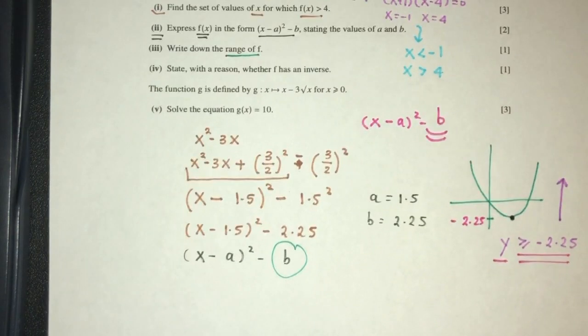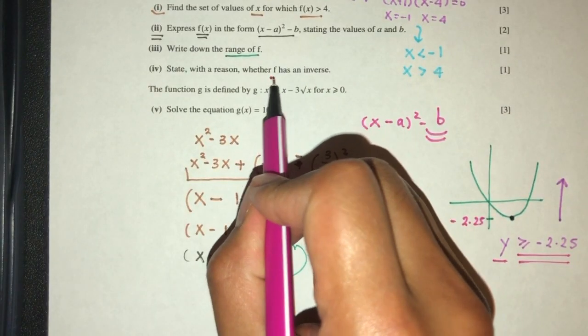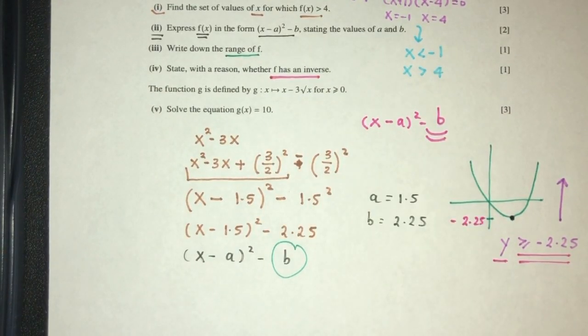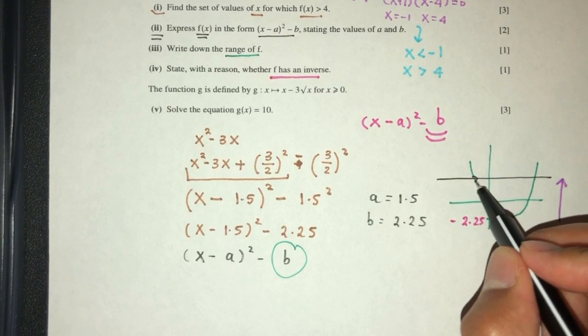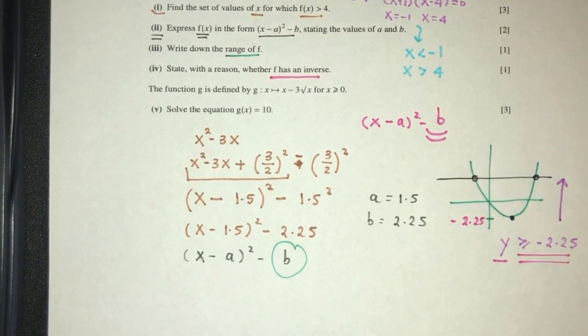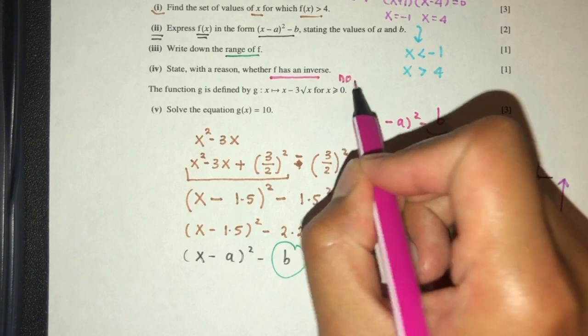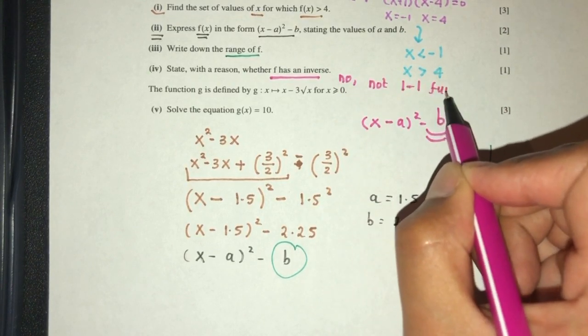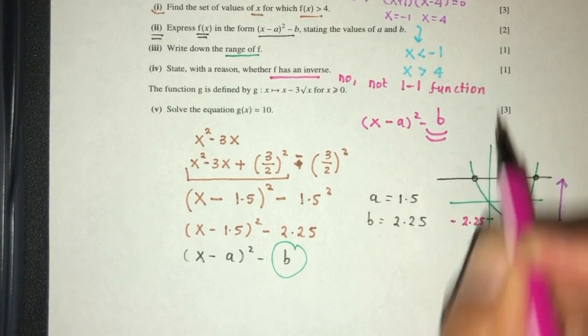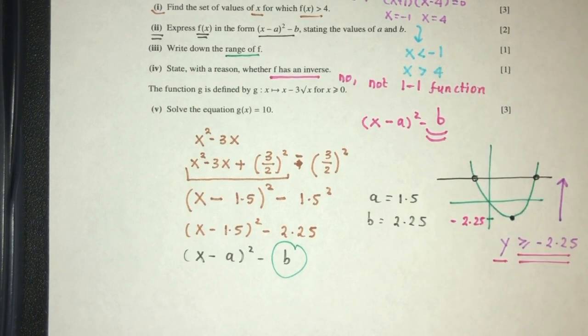Now part four, state with reason, whether f has an inverse or not. Obviously it does not have an inverse because it is not a one-to-one function. So what does that mean? If I were to draw a line here, it meets at two points. Because of that, it is not a one-to-one function. So you can say no, not one-to-one function. It is only one mark. Okay?